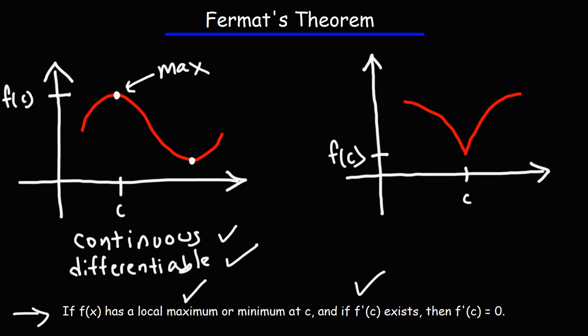Now according to Fermat's Theorem, if these conditions are met—if f(x) has a local maximum at point c, and if it's differentiable, that means if f'(c) exists at that point—then the conclusion is that the derivative at that point will be zero.